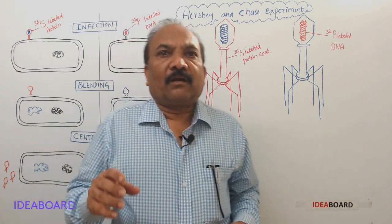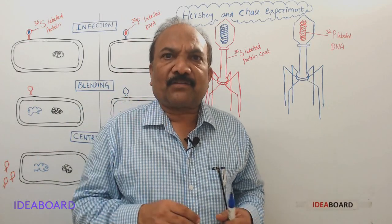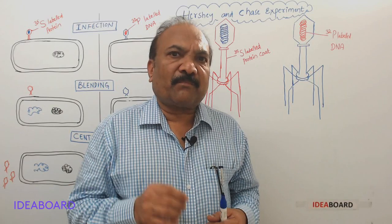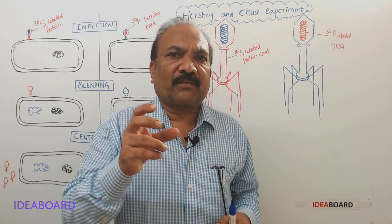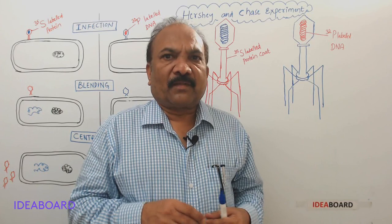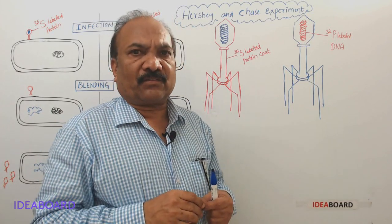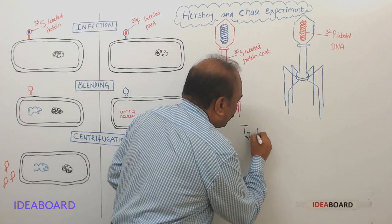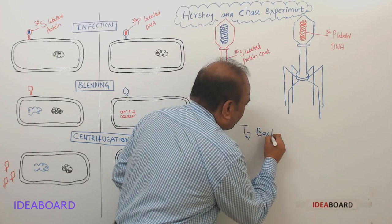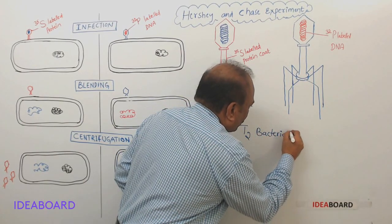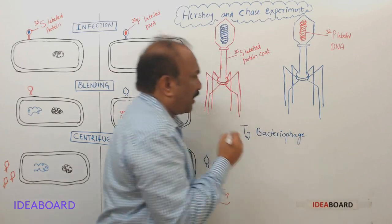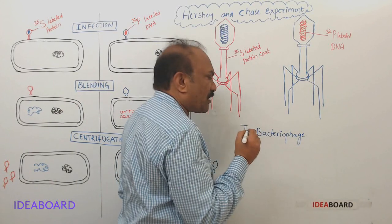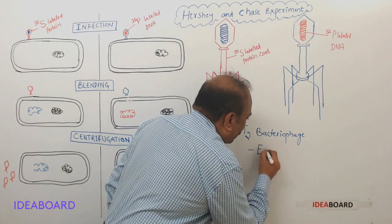Hershey and Chase selected a virus as their experimental tool. The viruses which infect bacteria are called bacteriophages. They selected one particular bacteriophage, T2, which infects Escherichia coli, or simply E. coli bacterium.